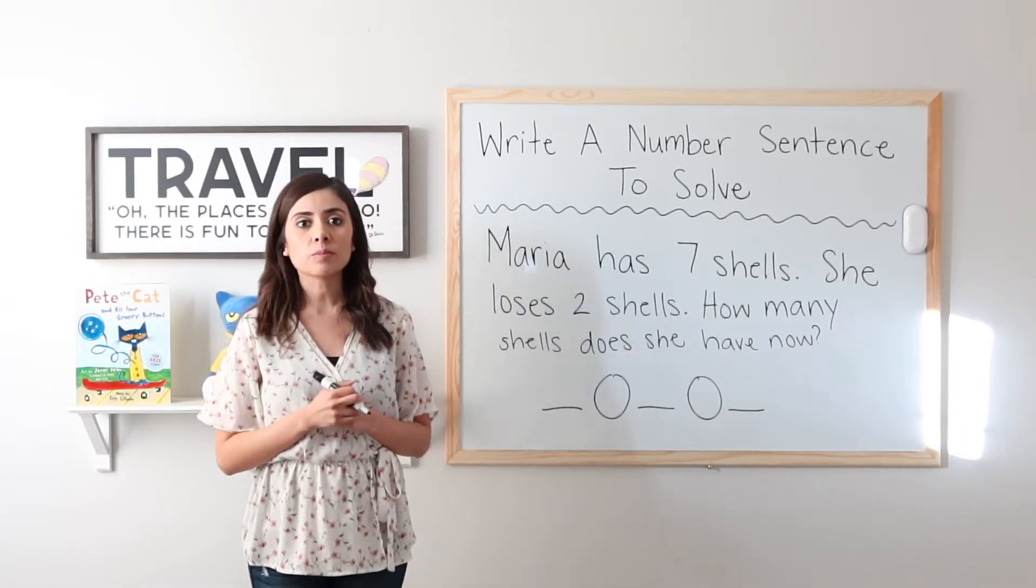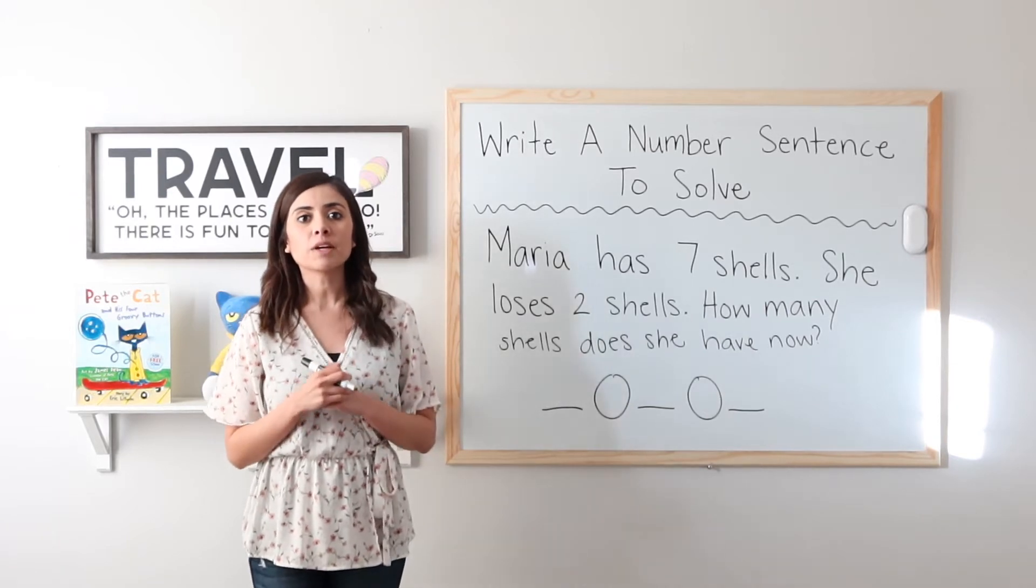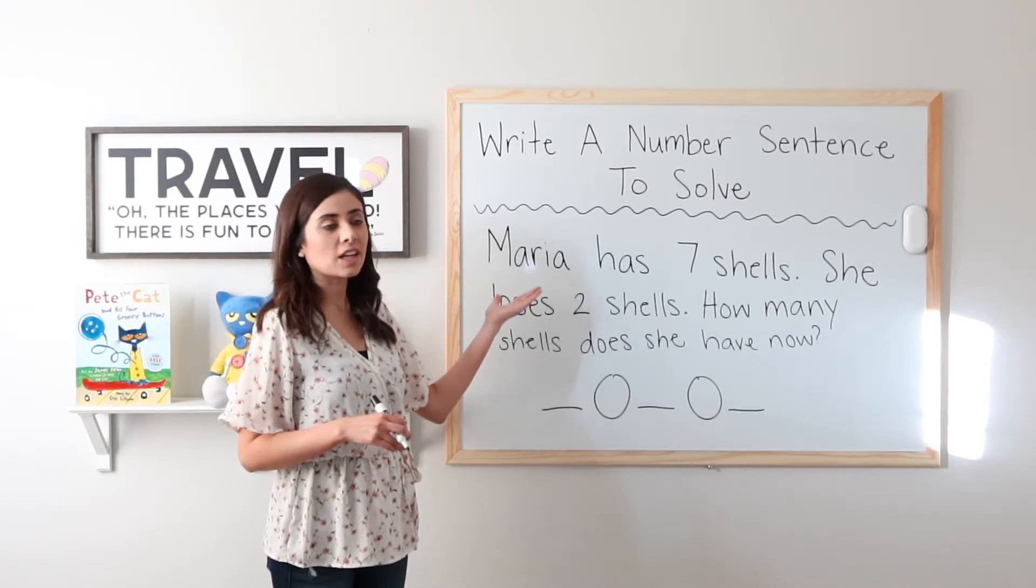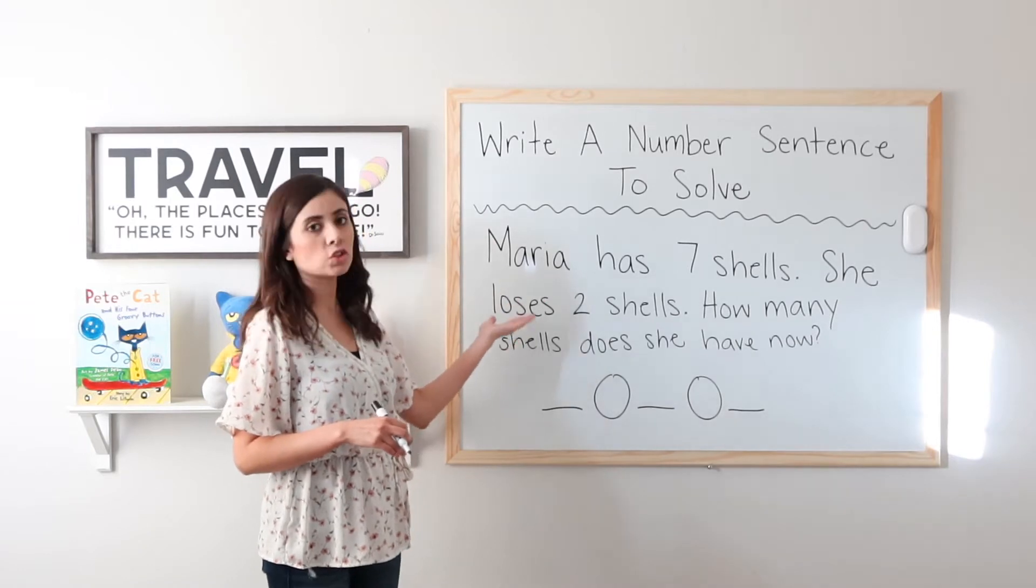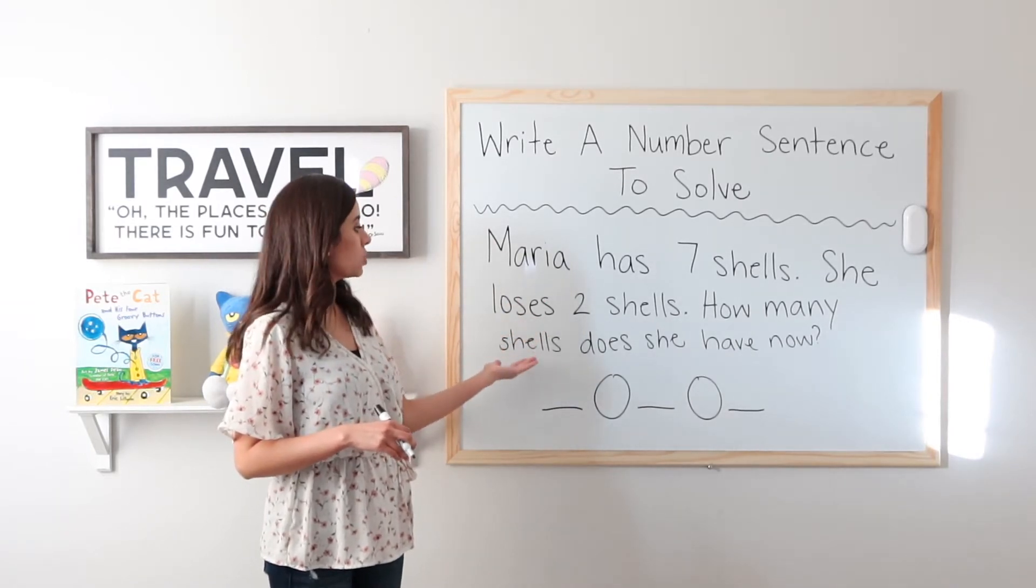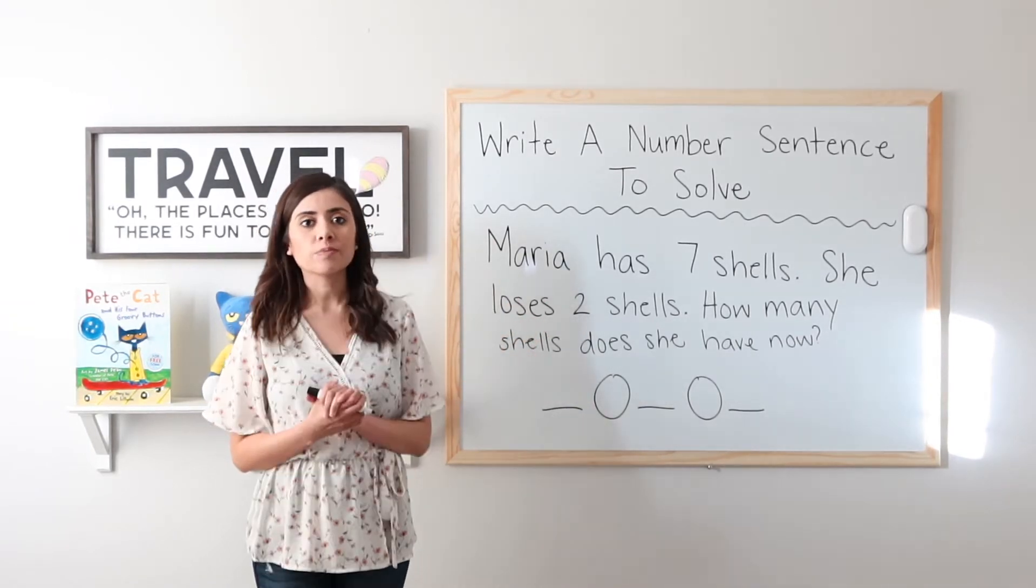Okay, so here's example number two. Let's go ahead and start by reading it. Maria has seven shells. She loses two shells. How many shells does she have now? Okay, very good.